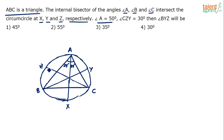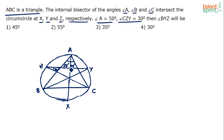Angle CZY is 30 degrees. He is asking us to find out angle BYZ. So CZY is given, and BYZ is equal to what? This angle — angle BYZ — is the question.